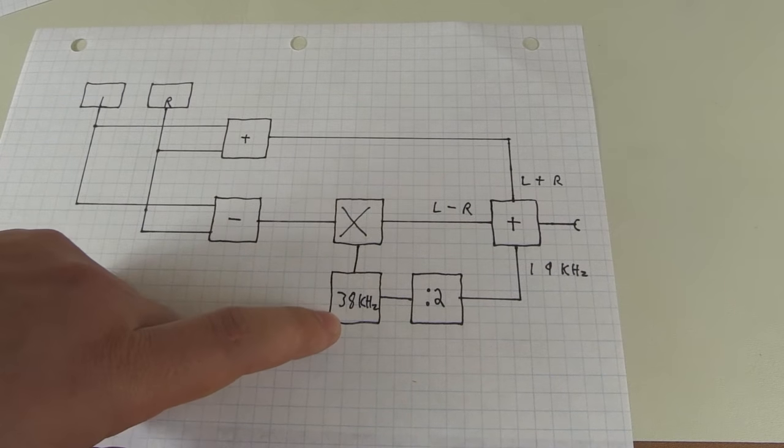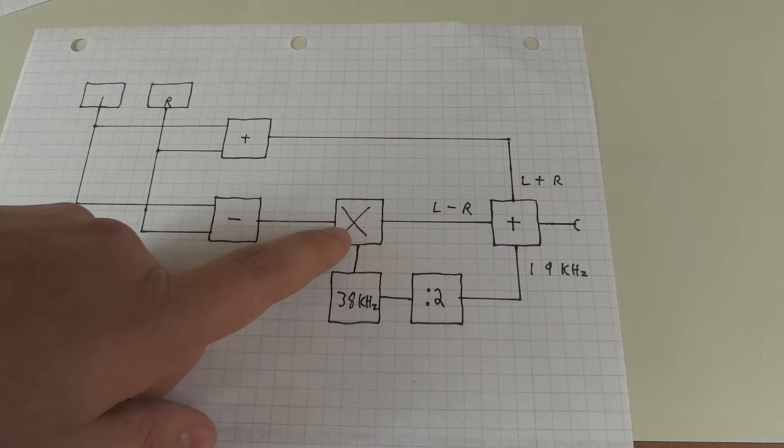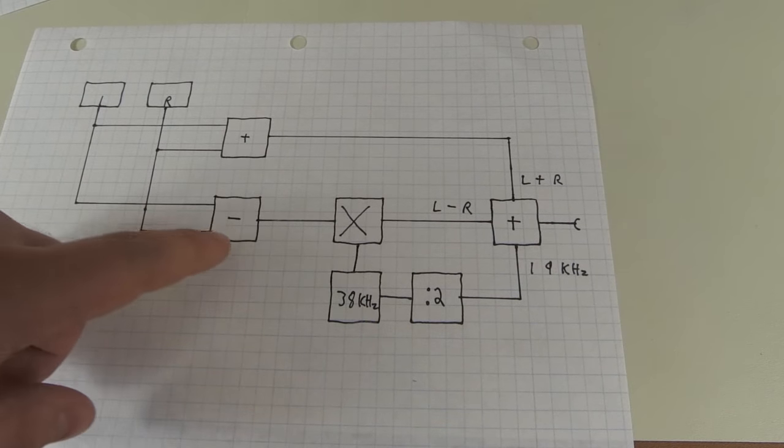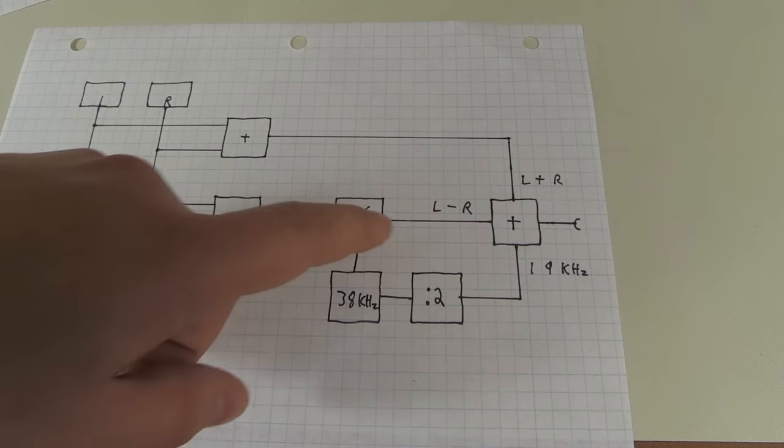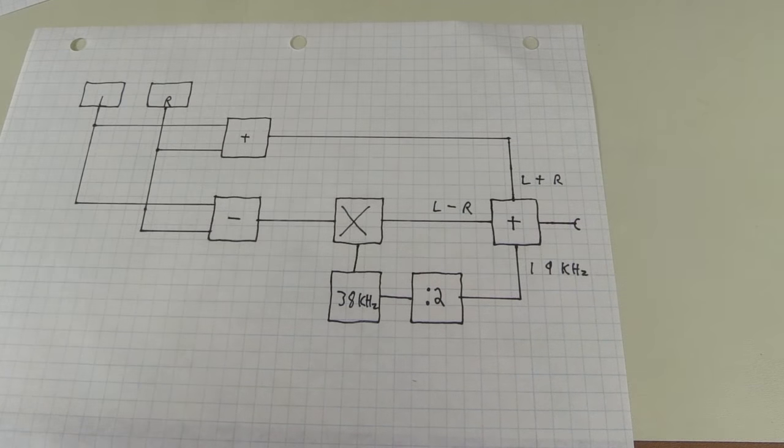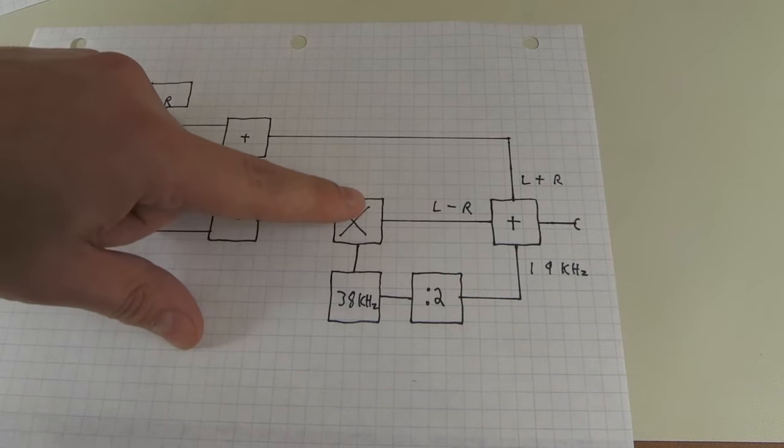So again down here is a 38 kilohertz oscillator. And here's a double balanced mixer of some sort. And you're putting your different signal right into it. And you create a double sidebanded left minus right signal.